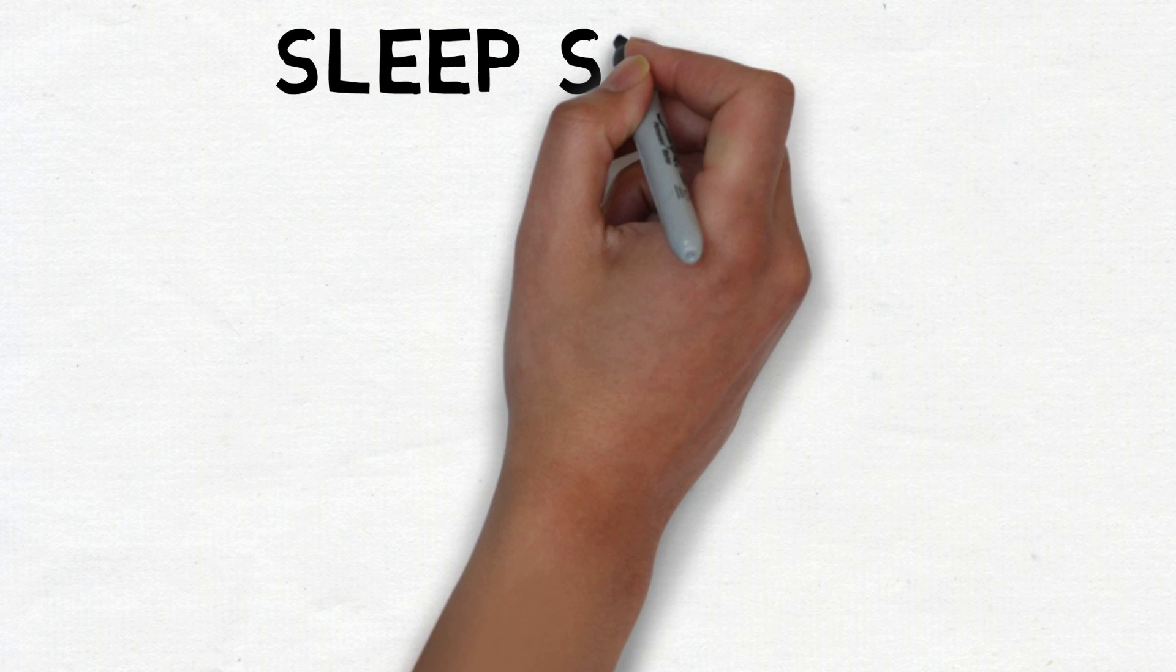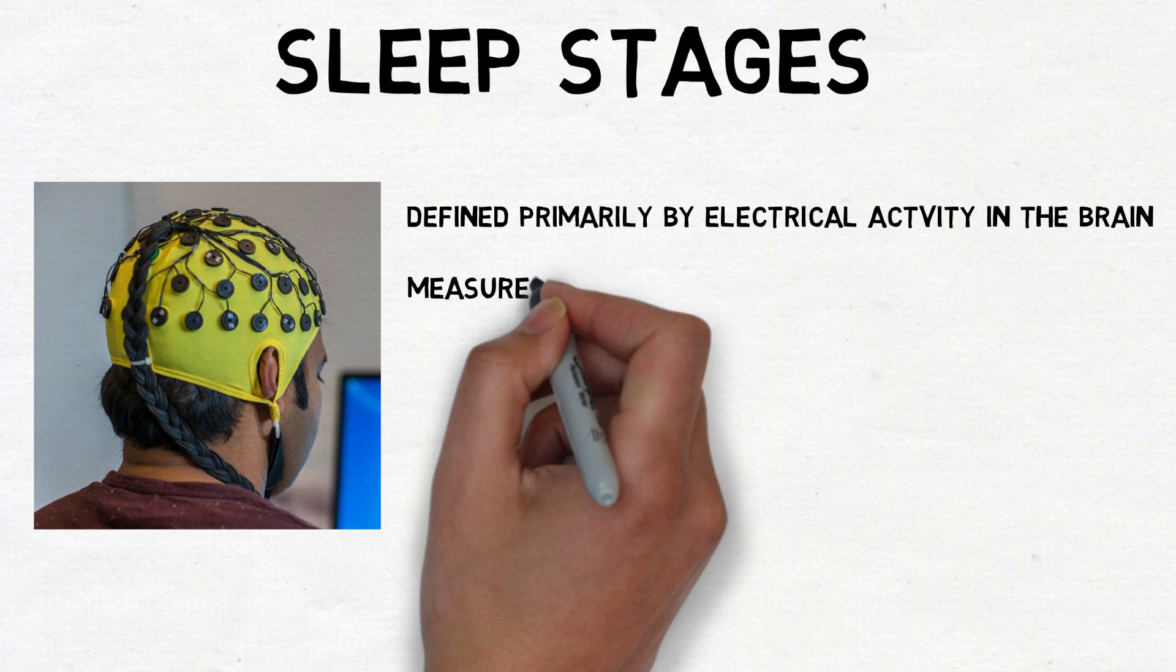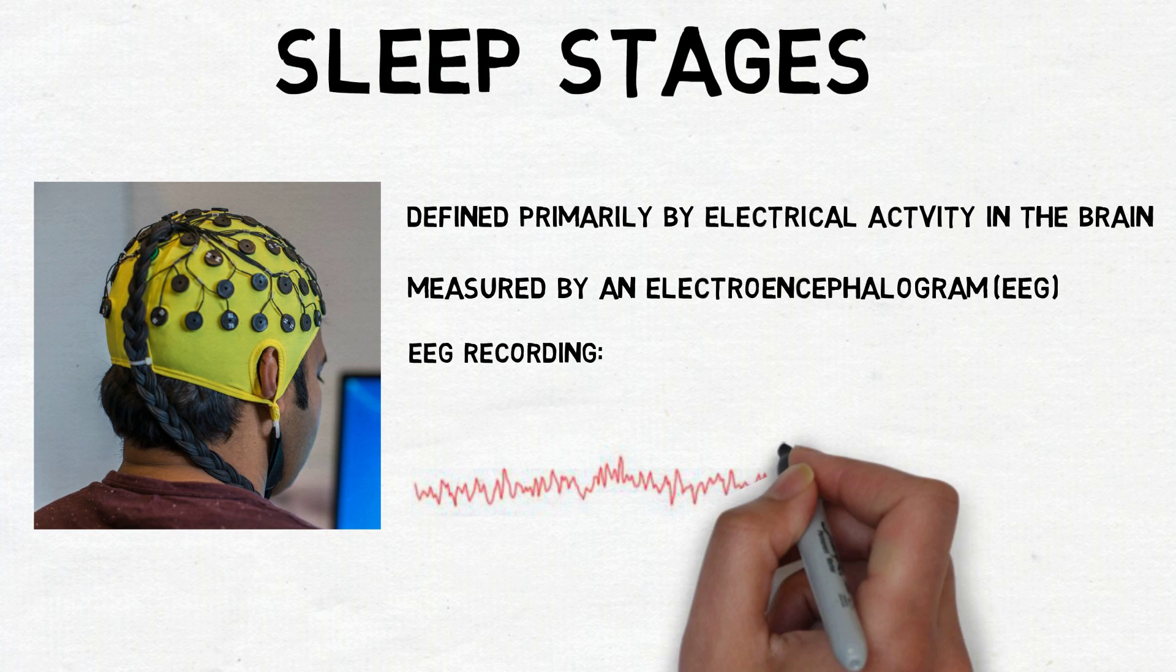Sleep stages are defined based on the measurement of electrical activity in the brain using an electroencephalogram, or EEG. An EEG represents fluctuations in brain electrical activity and voltage as a waveform of variable frequency and amplitude.